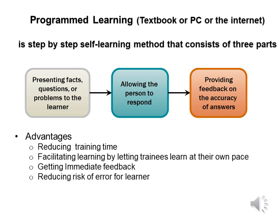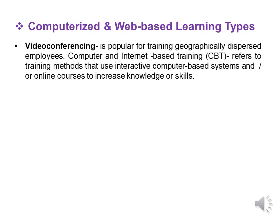Program learning is a special training technique — a step-by-step self-learning method that consists of three parts: presenting facts, knowledge, and problems to the learner; allowing the person to respond at their own pace while providing deadlines; and providing feedback about the accuracy of their answers. Computerized and web-based learning, like video conferencing, is mostly used for training geographically distributed employees and may include interactive ways of learning.